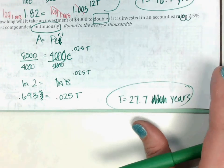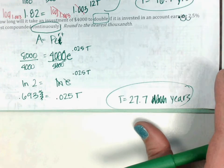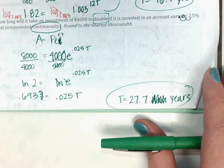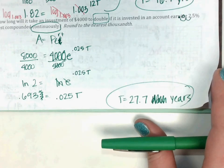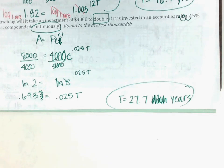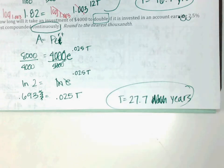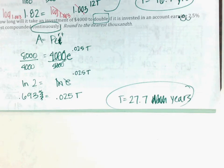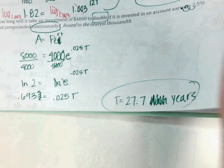Next week we're just reviewing for the semester exam. Would you like extra credit for bringing your progress reports back signed? Get it signed and bring it back. I'll do maybe 10 points. All your reviews are quiz grades — you should have straight hundreds on those.